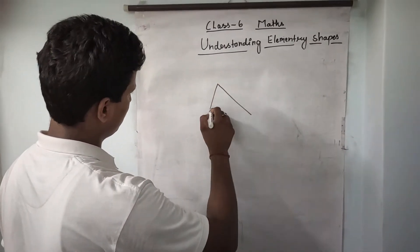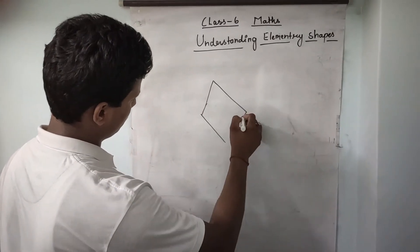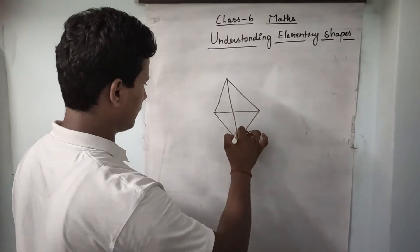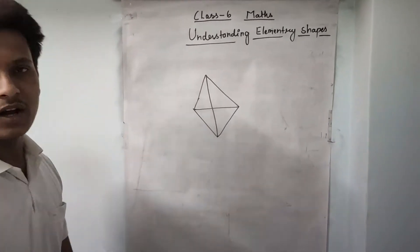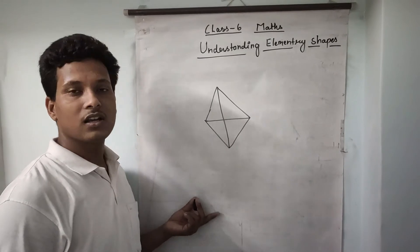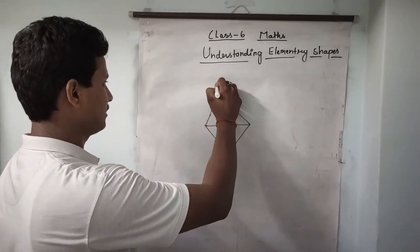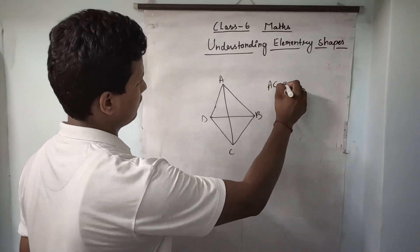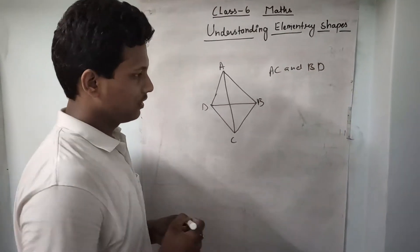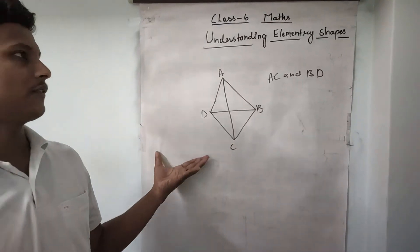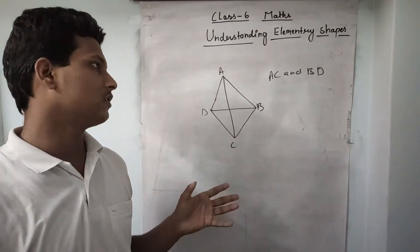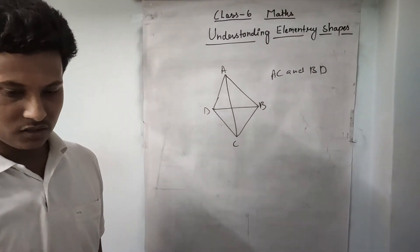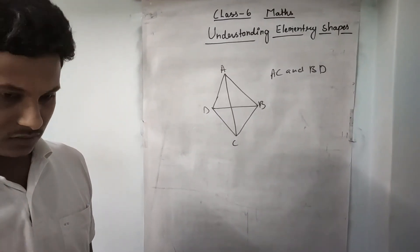In any quadrilateral, diagonals means the meeting of opposite vertices. Meeting of opposite vertices are called diagonals. Like if A, B, C, D is a quadrilateral, then AC and BD are the diagonals. When we meet the opposite points of any quadrilateral, it is called a diagonal. Each quadrilateral has only two diagonals.